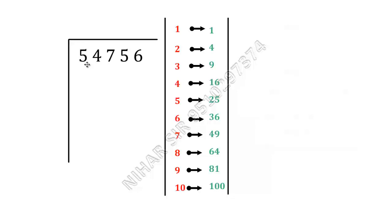So this is my question 54756 and I want to find its square root. My step 1 is pair the digits of the number from right to left. So I will make pair of these two numbers, I will make pair of these two numbers and I cannot make one more pair. So 5 is alone.